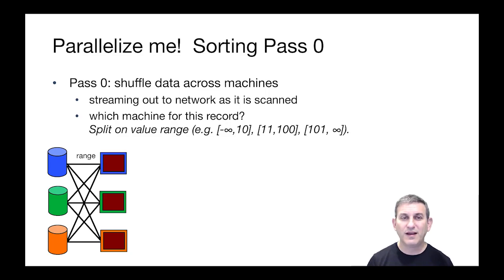Now let's talk about sorting. We've talked about how to parallelize it before. We're going to shuffle the data across the machines, streaming it out to the network as it's scanned. And the challenge, which we talked about briefly earlier, is that we have to split the data up by values.